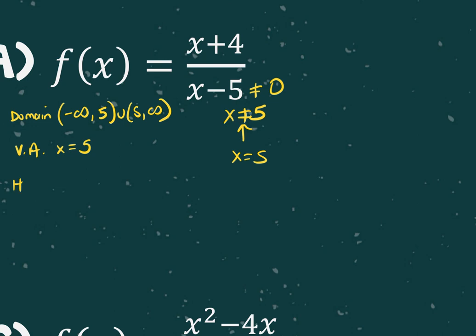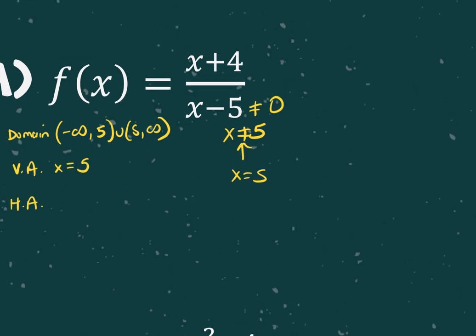For the horizontal asymptote, what's the relationship of the degree in the top and the bottom? They're the same, which means we use the leading coefficients. The leading coefficient in the numerator is one, and in the bottom is one, so it would be one over one, or just one.